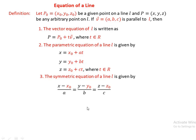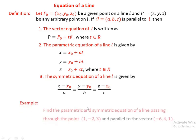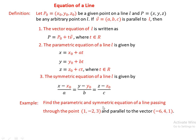Now we have the vector form, parametric equation, and symmetric form of the equation of a line L. Example: Find the parametric and symmetric equation of a line passing through the point (1, -2, 3) and parallel to the vector V equals (-6, 4, 1). The given point is P-naught with x-naught, y-naught, z-naught equals (1, -2, 3), and the parallel vector V equals (-6, 4, 1).